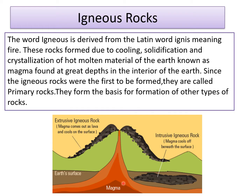As you can see, here is the hot molten material called magma. As long as the material is inside the earth, it is called magma. But when this hot molten material comes out through the vent and spreads on the earth's surface, it is called lava. So inside the earth, magma cools and solidifies and turns into rock. And outside on the surface of the earth, lava cools and solidifies and forms rocks.